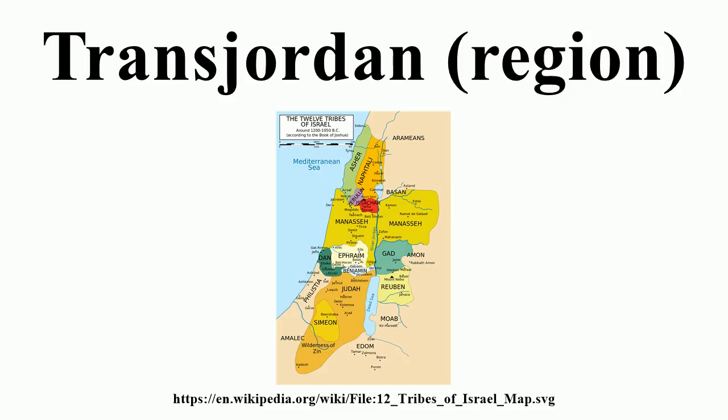The prefix 'Trans' is Latin and means 'across' or 'beyond,' and so Transjordan refers to the land on the other side of the Jordan River. The equivalent term for the west side is Cisjordan, literally meaning 'on this side of the River Jordan.'